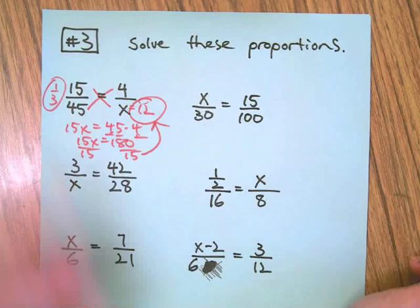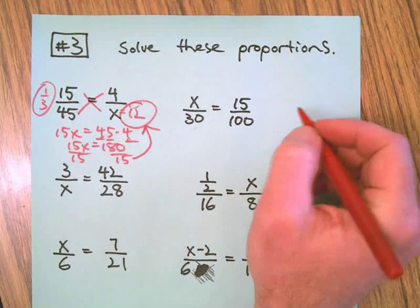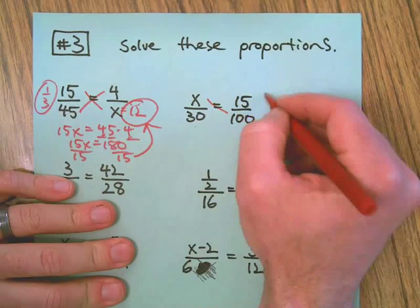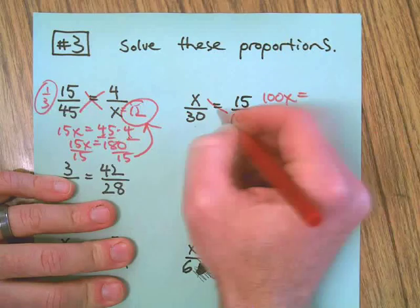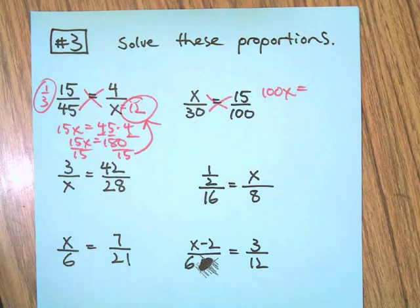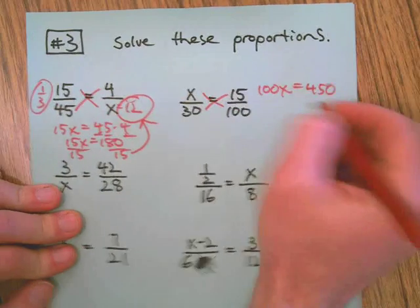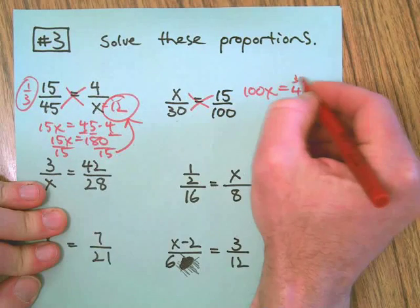Next, this one doesn't work out mentally like the first one quite so well, but we can cross multiply. 30 times 15, I think is 450, but let's check it out. I was right, amazing.